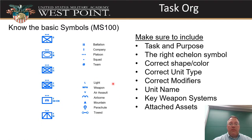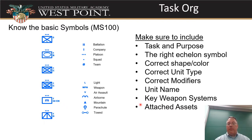Make sure you use the correct modifiers that go inside the symbol: L for light, air assault with the little V-looking one, airborne, mountain with the triangle, parachute with the little ice cream cone shape, and towed. Those are some common ones you should know; there are a lot of others in the book. Make sure you put a unit name up there and study up on your key weapon symbols — the common ones like machine guns (light, medium, or heavy), anti-tank weapons, anti-tank missiles versus rockets. Also make sure your task org includes your attached assets.